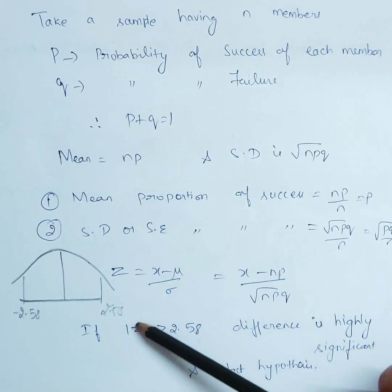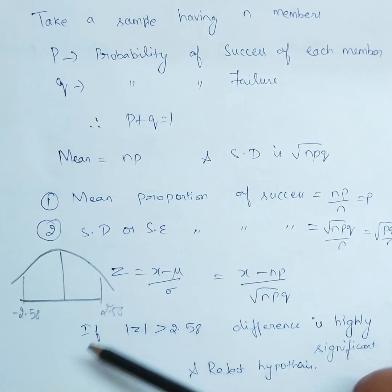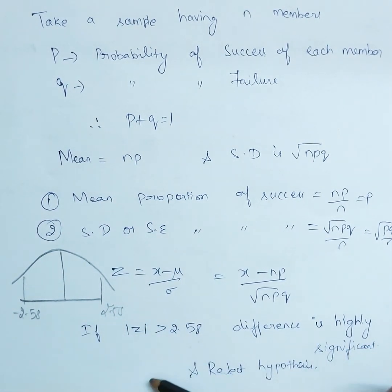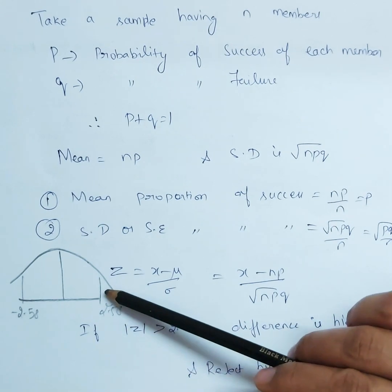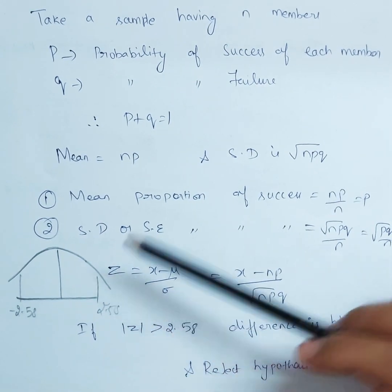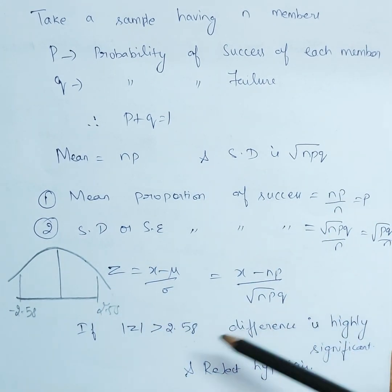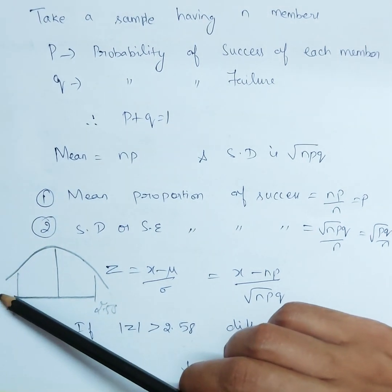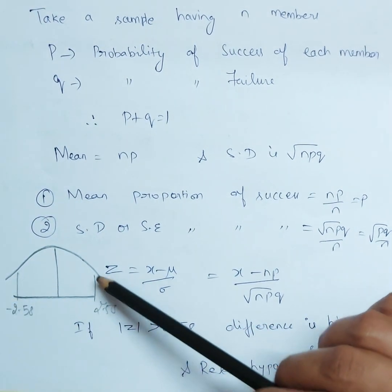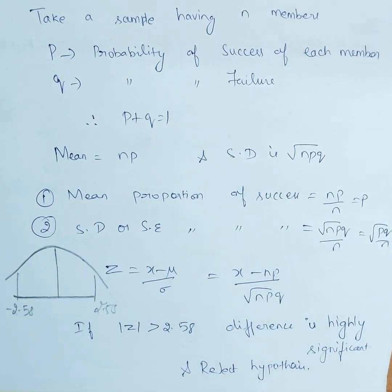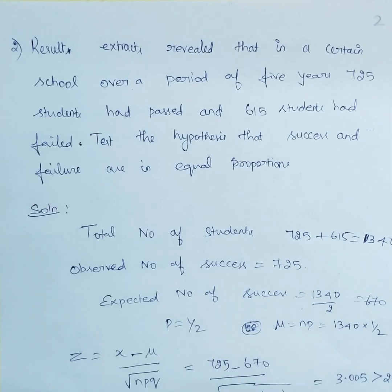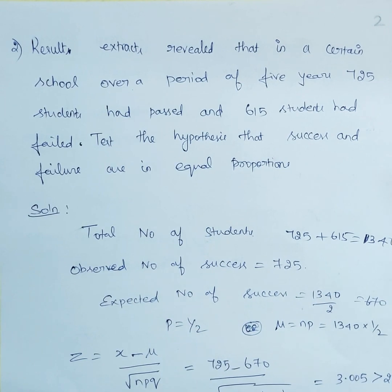If the calculated value — we use the modulus value because we don't mind which side it falls on — is greater than 2.58, the difference is highly significant and it goes outside the region, so we reject the hypothesis. Whether it goes to the left tail or right tail, we reject. Only inside the region can the hypothesis be accepted.